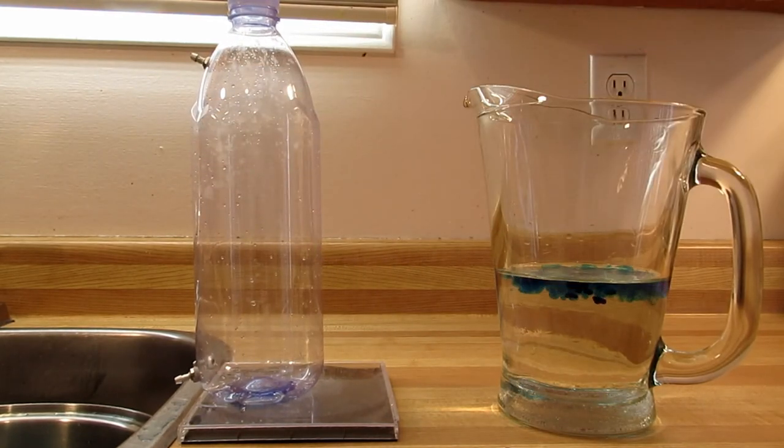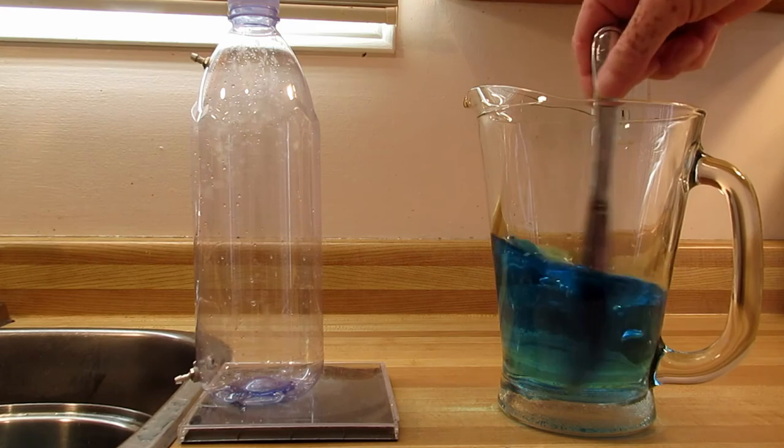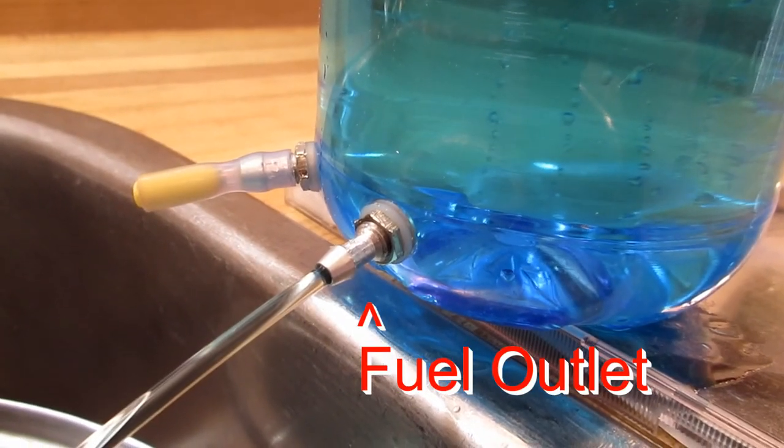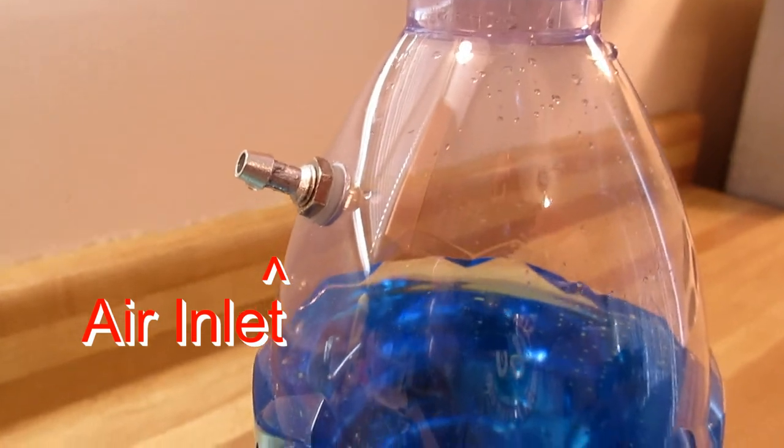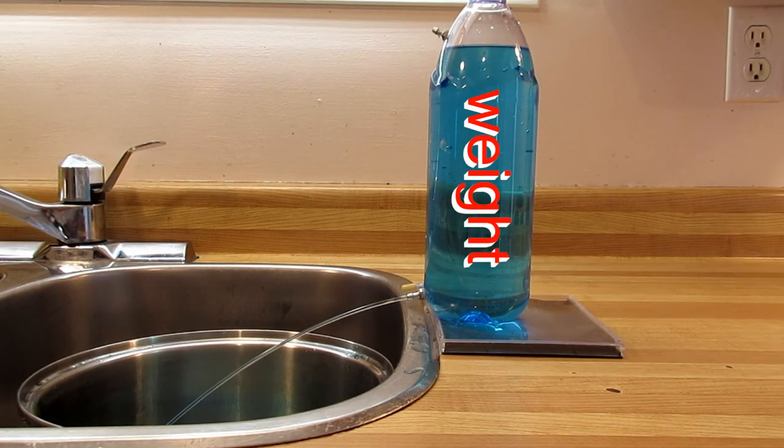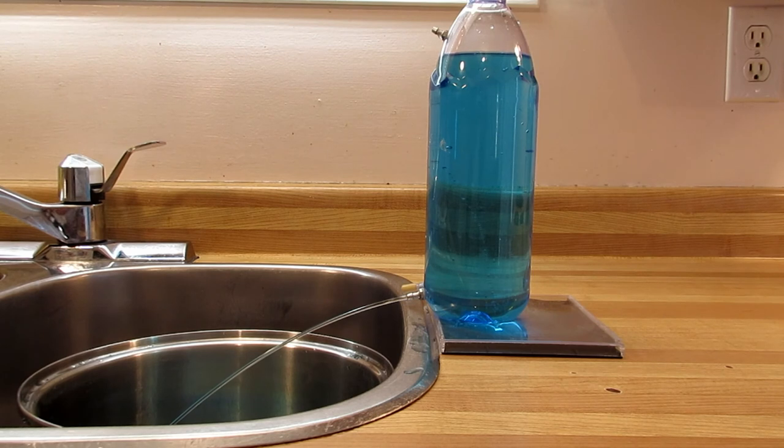Let's simulate some fuel by putting a bit of blue food coloring in water. A standard vented fuel tank has a fuel outlet at the bottom and an air inlet at the top. The weight of the fuel in the tank bears down on the fuel outlet to create fuel pressure.